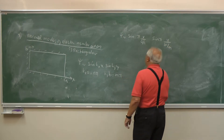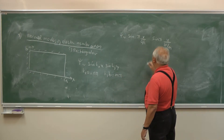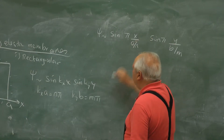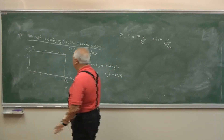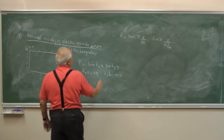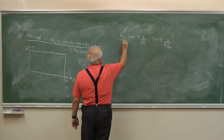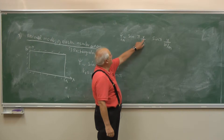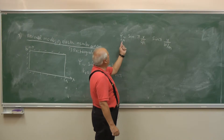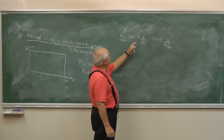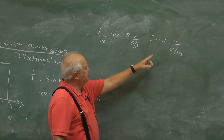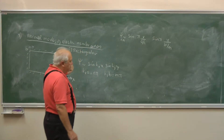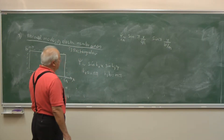Why is this easier to write? Because a/n means you are dividing the dimension, and we label modes as an ordered pair (n, m), where the first refers to X and the second to Y.